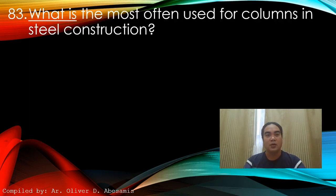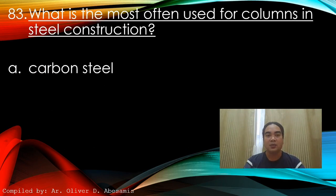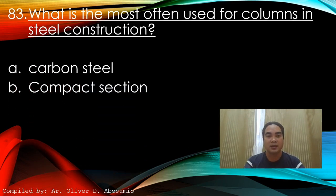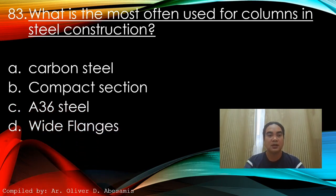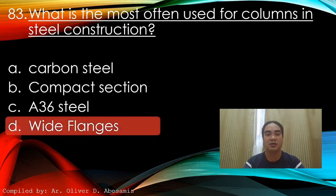Question 83: What is most often used for columns in steel construction? A) Carbon steel, B) Compact section, C) A36 steel, D) Wide flange. Answer: D) Wide flange.